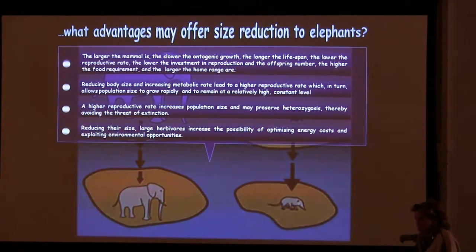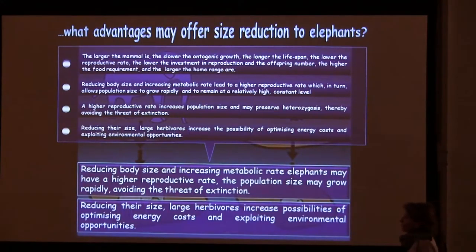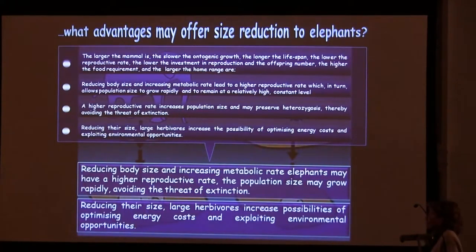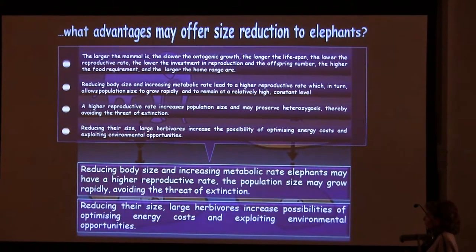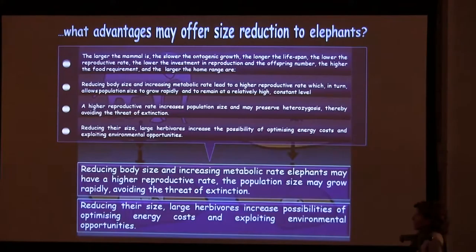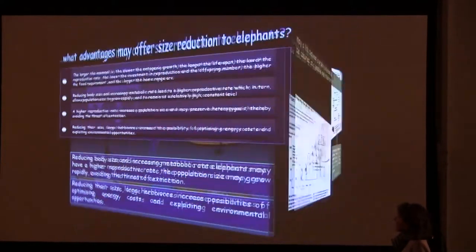Is that true? If so, taking into account these points, we may assume that by reducing body size and increasing metabolic rate, elephants may achieve a higher reproductive rate and the population size may grow rapidly, avoiding the threat of extinction. And by reducing their size, all large herbivores can increase the possibility of optimizing energy costs and exploiting environmental opportunities.